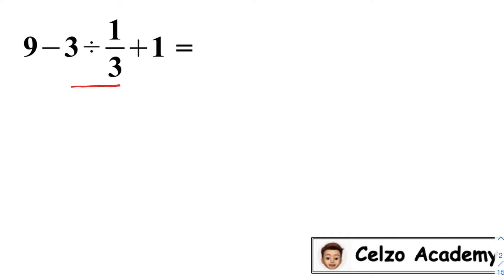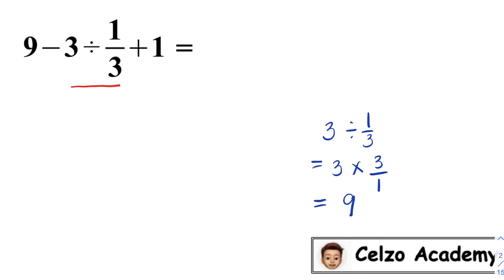3 divided by 1 third is equal to 9. To show the work for that: 3 divided by 1 third is the same thing as 3 times the reciprocal of 1 third, which is 3 over 1. So the answer is 3 times 3, which is 9. 9 divided by 1 is 9.